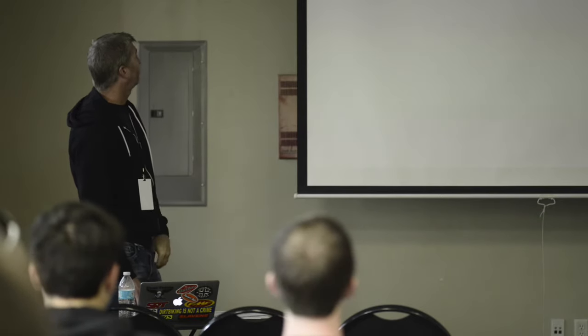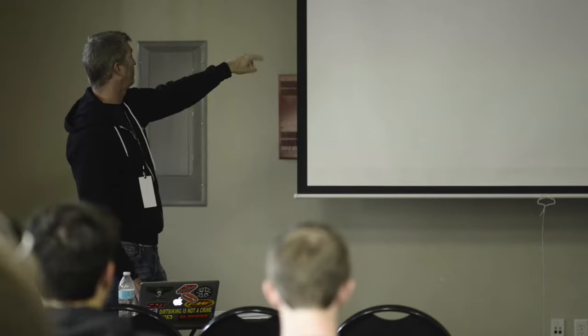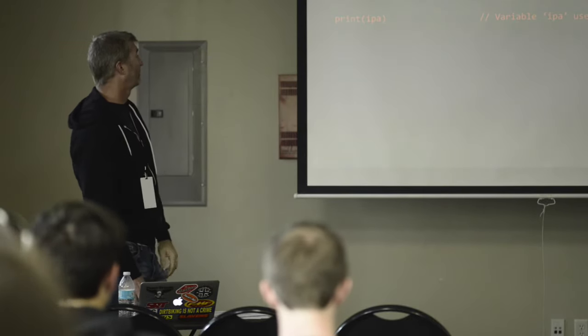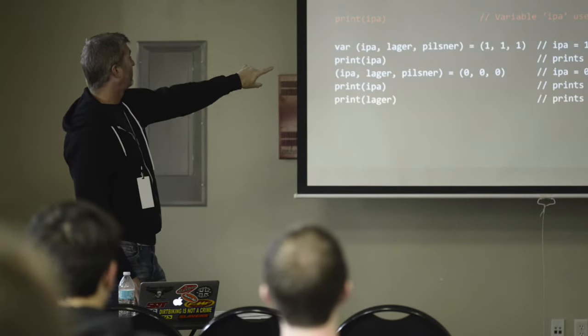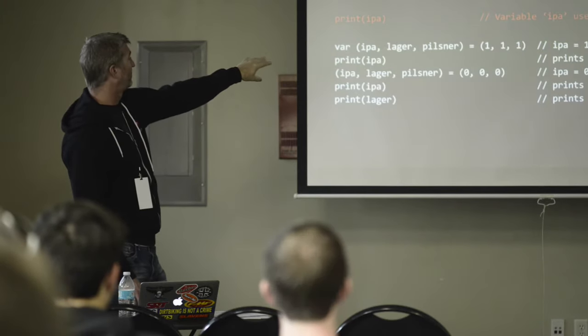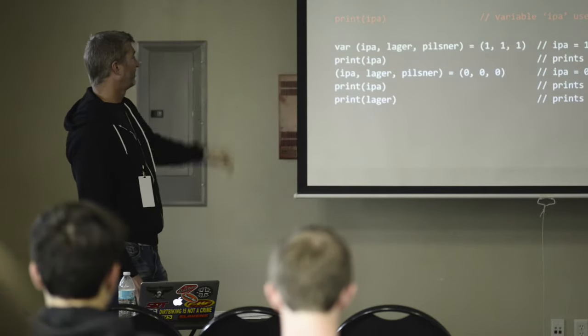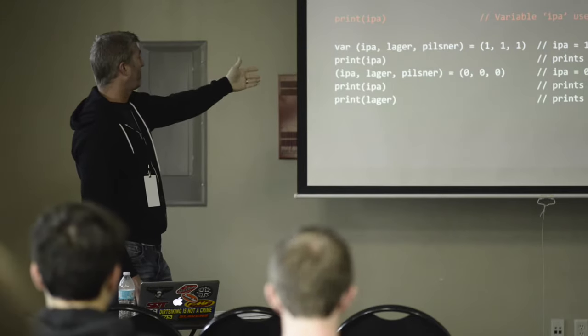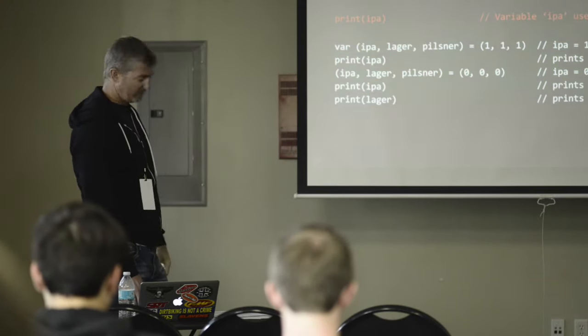Swift has type annotations and tuple or chain assignment. You can create an uninitialized variable, but then you have to declare its type explicitly. You can do chain variable creation: var ipa, lot, pilsner — those all become ints. If you try to access IPA before initializing it you get a compiler error. You can do tuple assignment: var ipa, pilsner, logger = 1, setting all values at once. Reassignment with tuples also works — you can reset everything to zero and print them out to confirm.